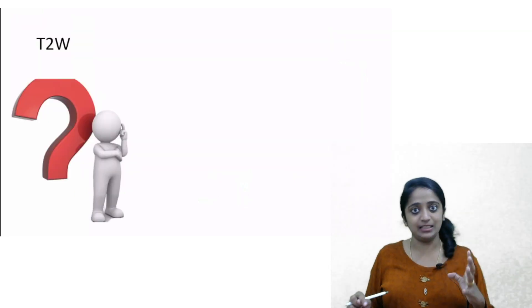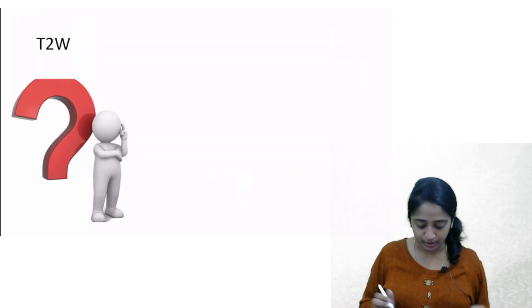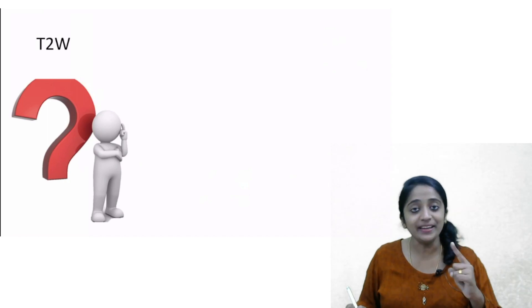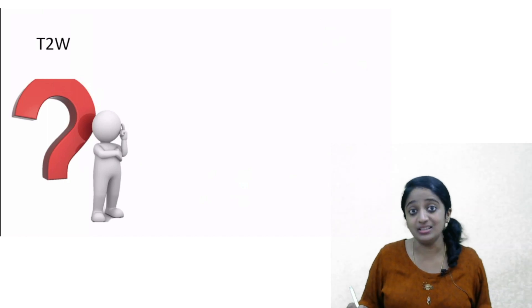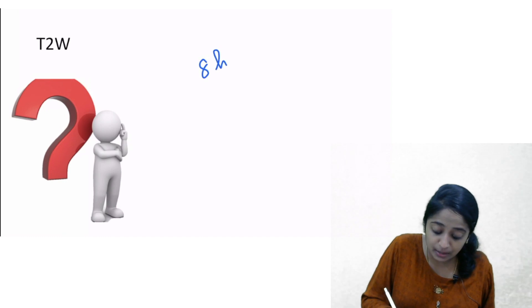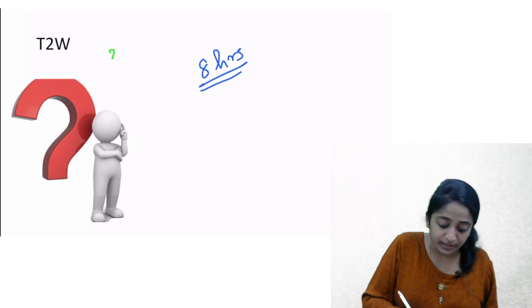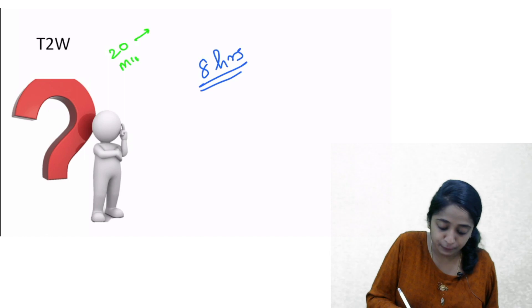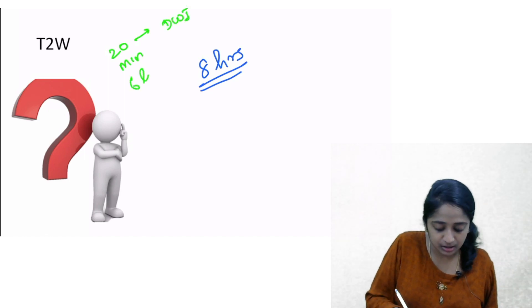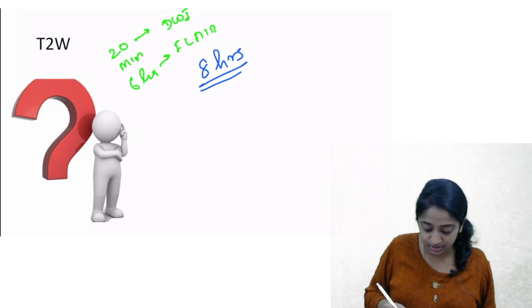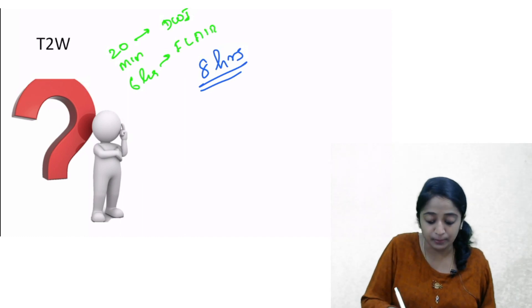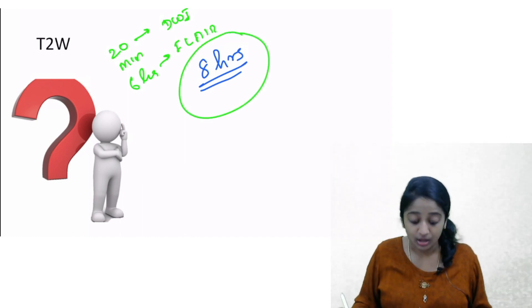Now let's move to the next sequence: T2-weighted imaging. When can you expect change in T2-weighted images? It takes a minimum of 8 hours. So: 20 minutes for diffusion-weighted, 6 hours for FLAIR, and for T2-weighted images, a minimum of 8 hours to depict change.